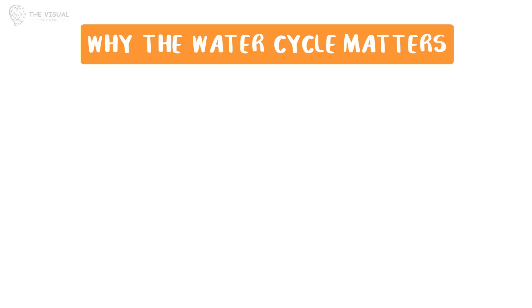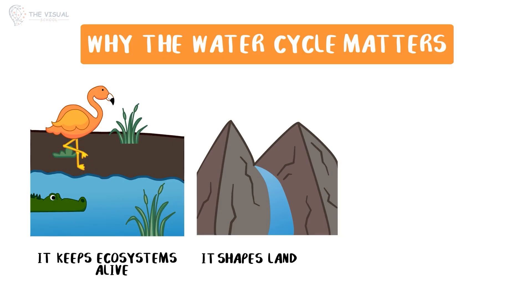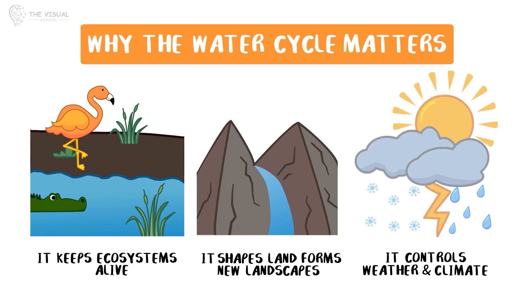The water cycle is Earth's natural life support system. It keeps ecosystems alive by delivering fresh water to plants, animals, and rivers. It shapes land by eroding mountains, carving valleys, and depositing sediments to form new landscapes. And it controls weather and climate by driving cloud formation, rainfall, and ocean currents that regulate temperatures worldwide.